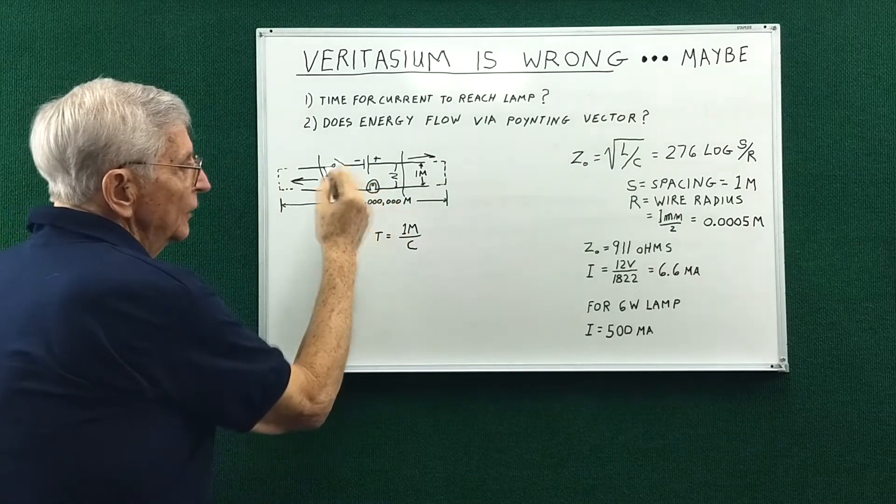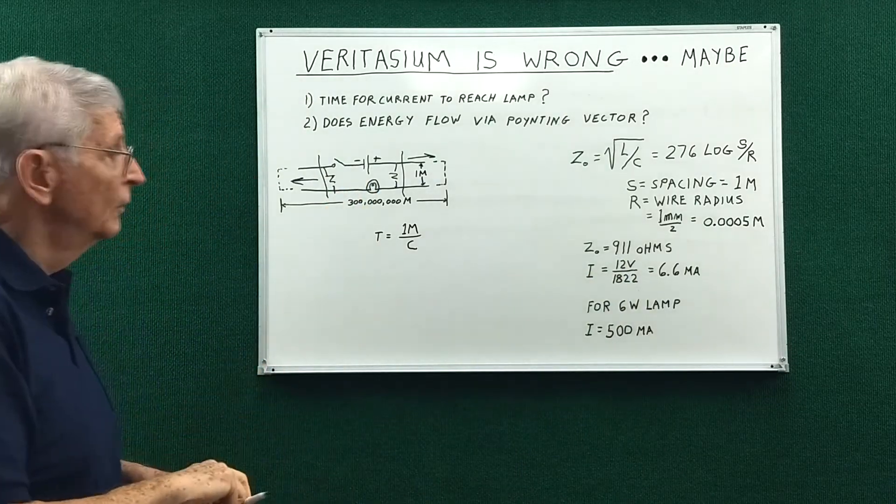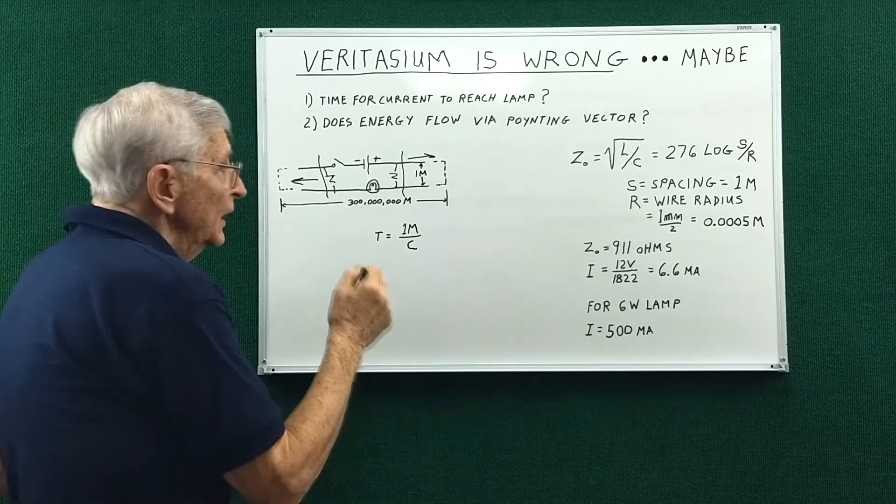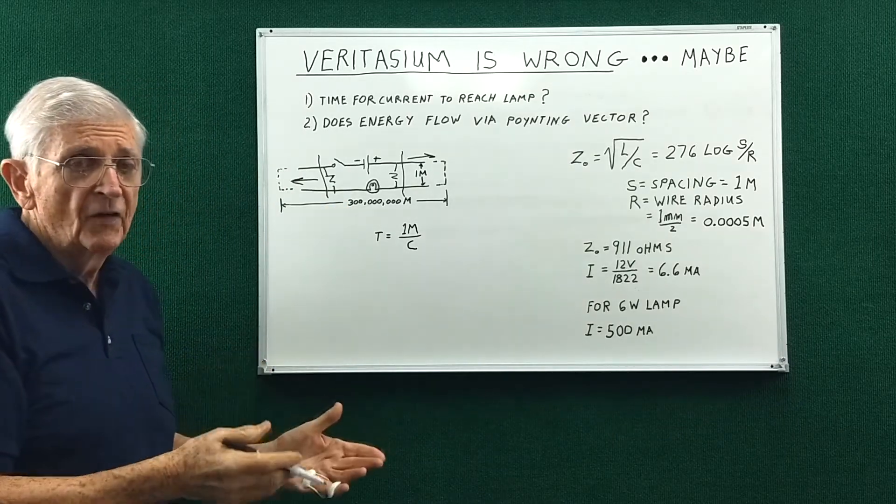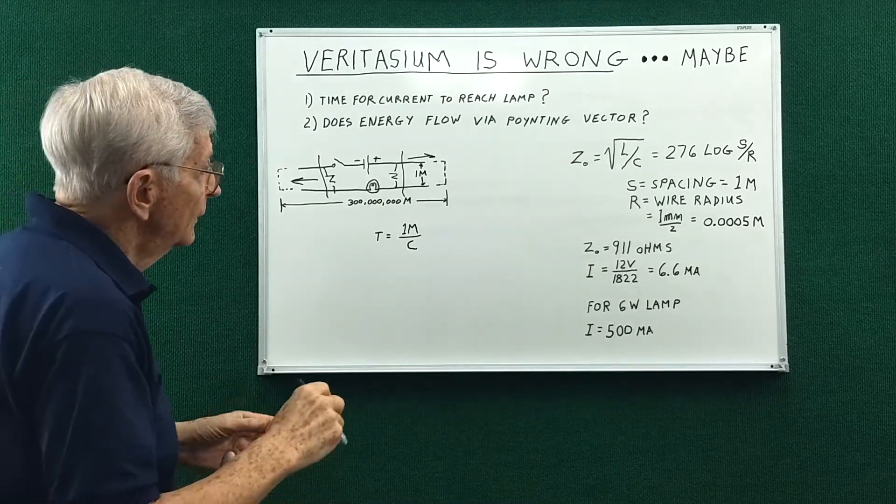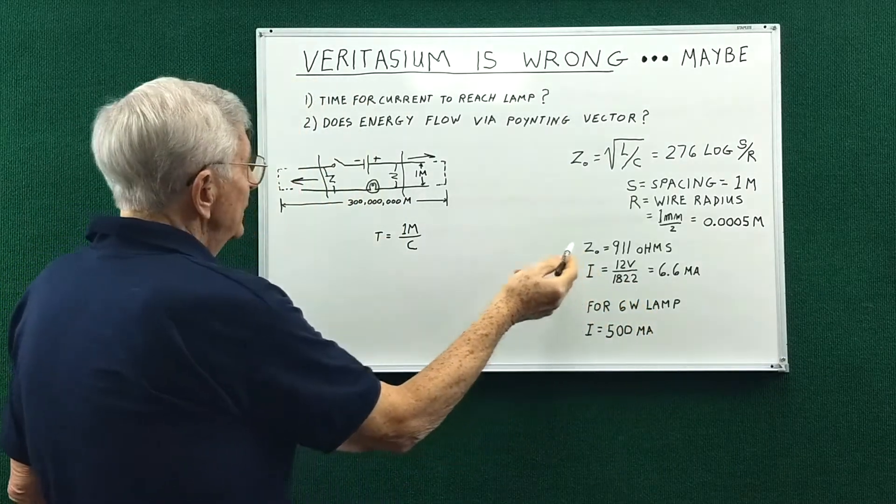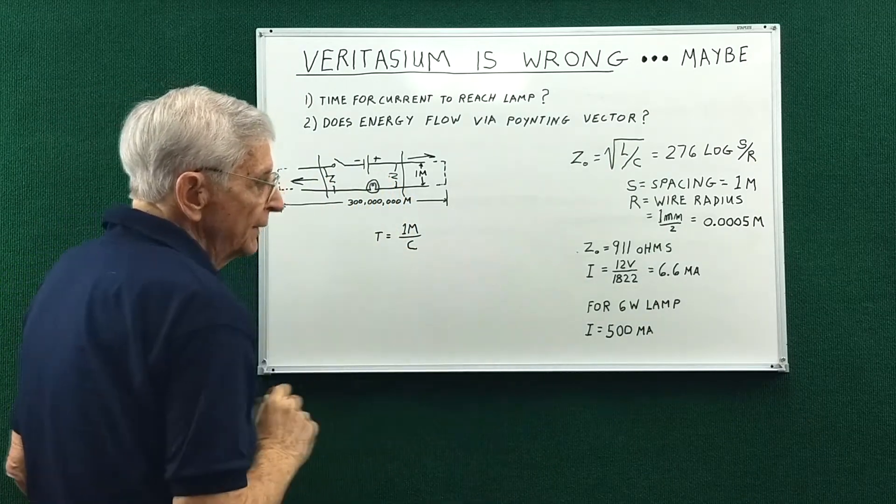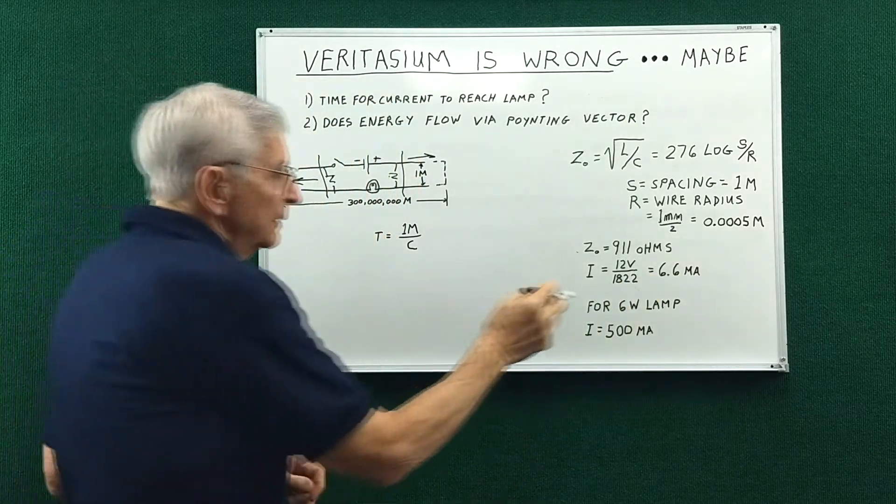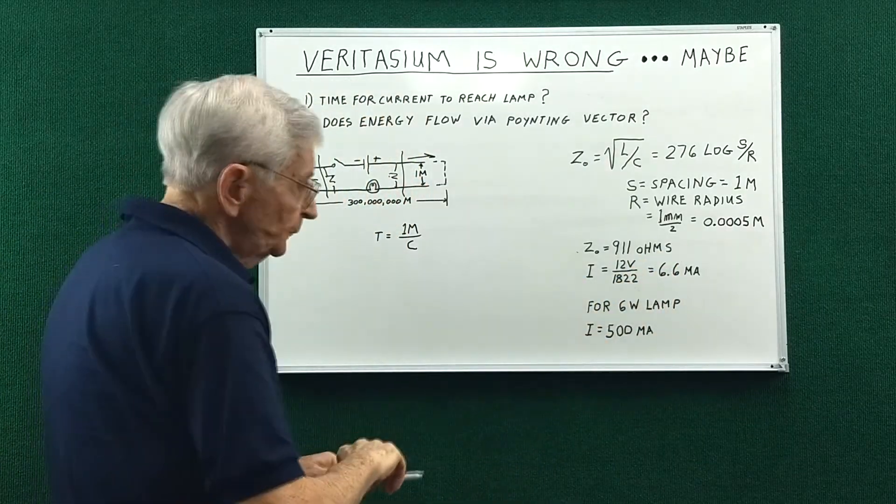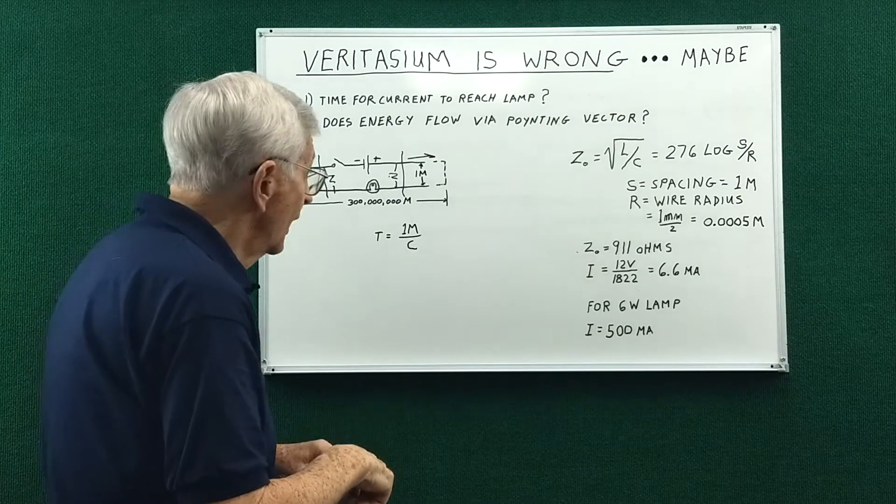We have a loop resistance of 1822 ohms plus the bulb resistance which is very small. So initially all circuits have an initial transient response and then a final steady state response. So the initial transient current would be the 12 volts divided by the impedance which is 2*Z_0, and we end up with 6.6 milliamps. Now that current can't appear instantly because no current or voltage can change instantly due to the propagation time of space.